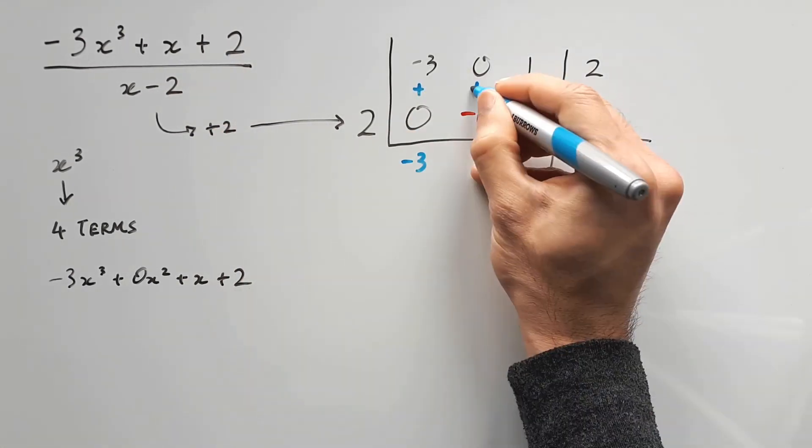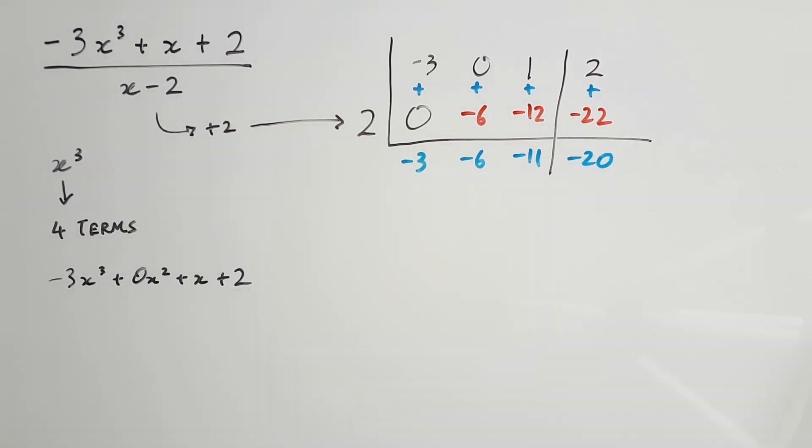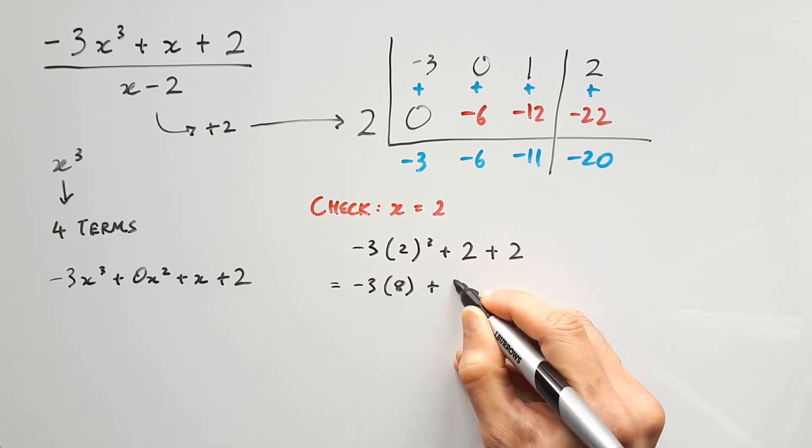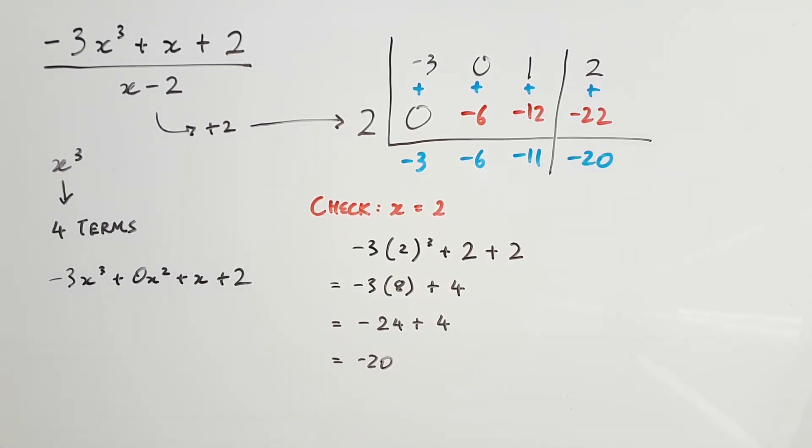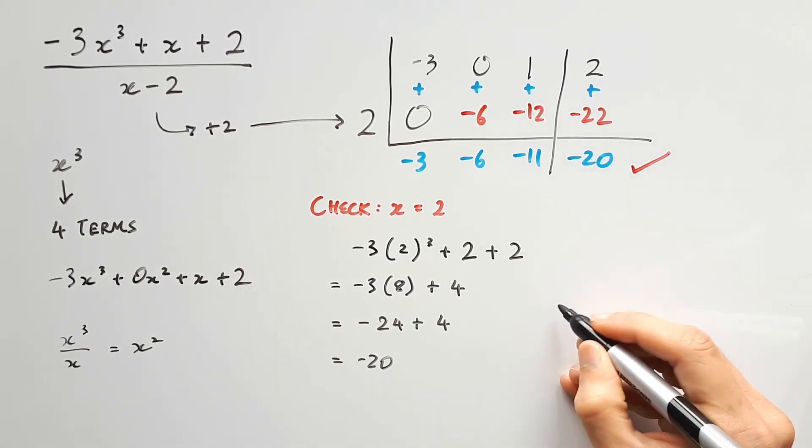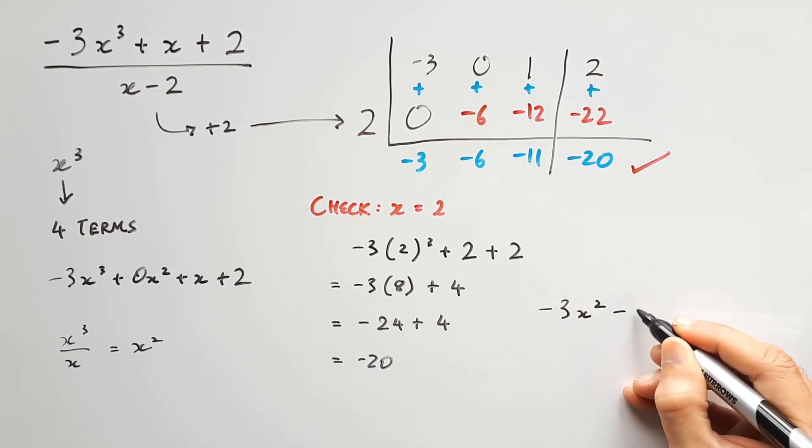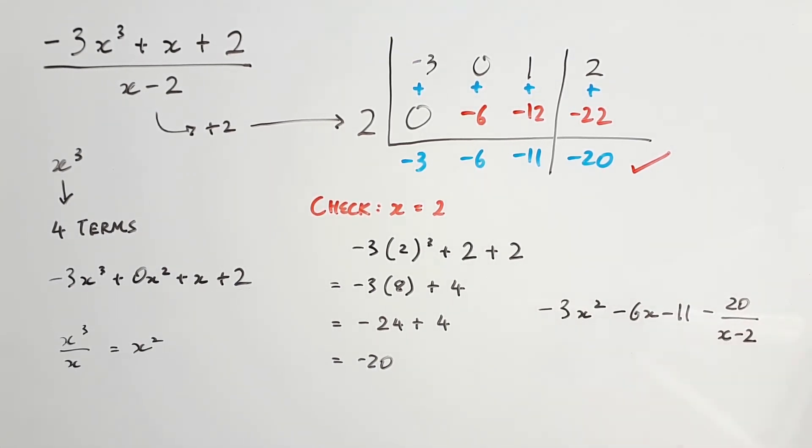From here, we alternate addition and multiplication. Once you have the result, check it by subbing positive 2 in the cubic. It gave us negative 20, which matches our remainder. So, it's all good. Our cubic is dividing a linear factor, so the quotient will be a quadratic again. So, our final answer is a quadratic minus the remainder over x minus 2.